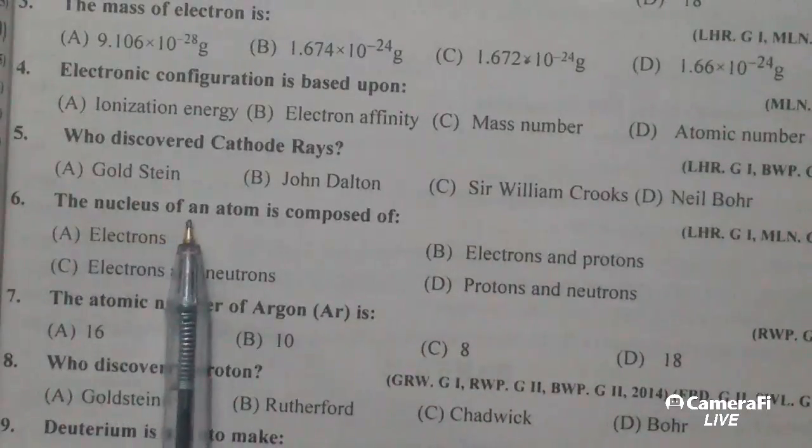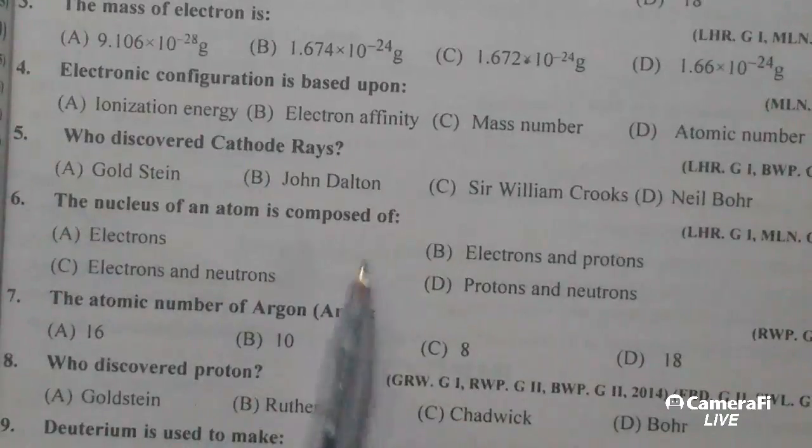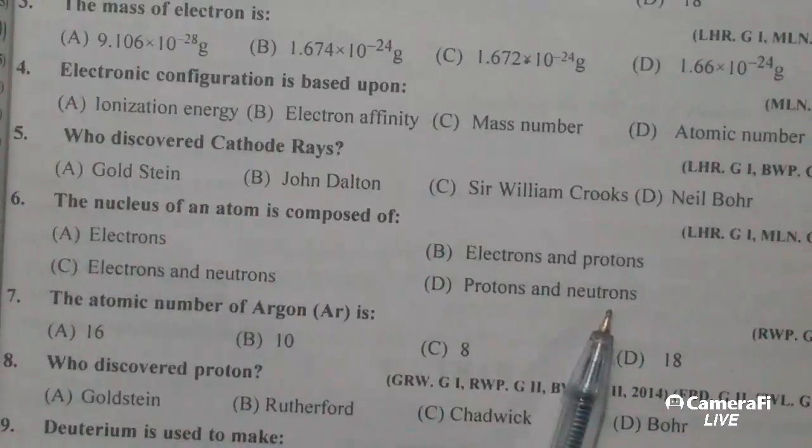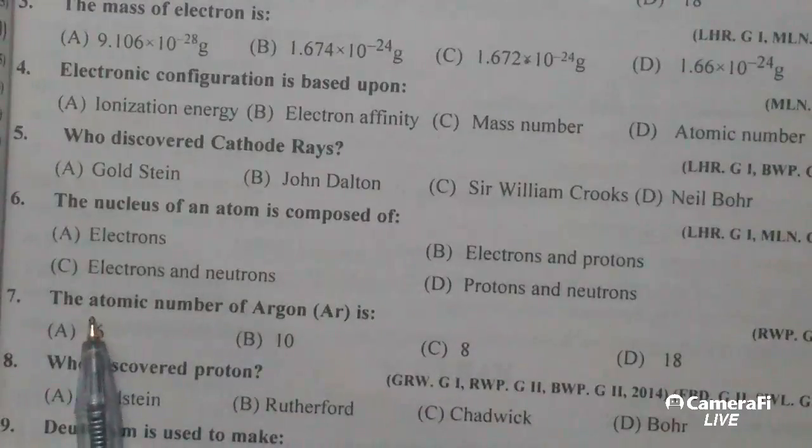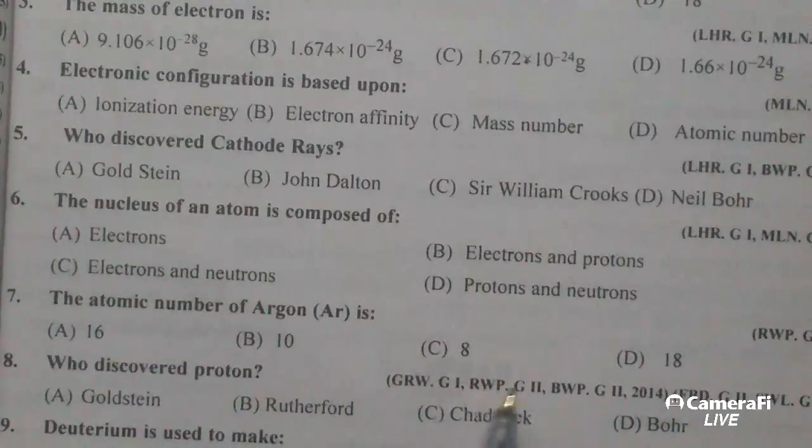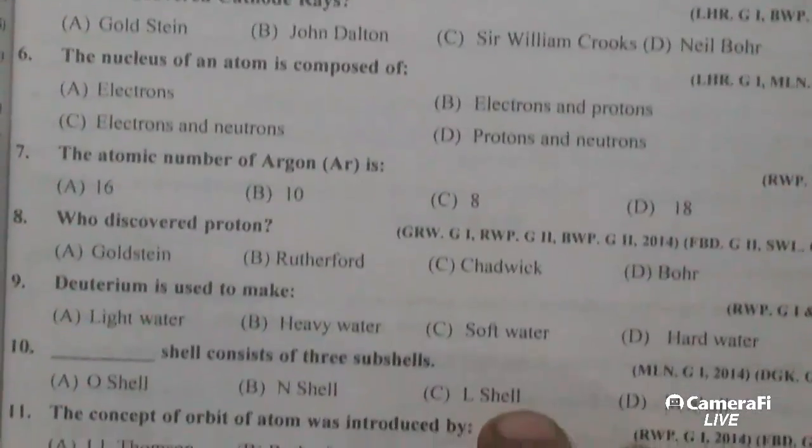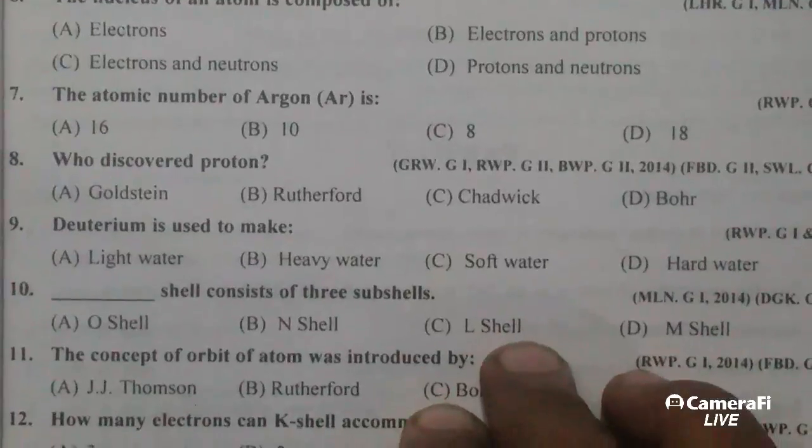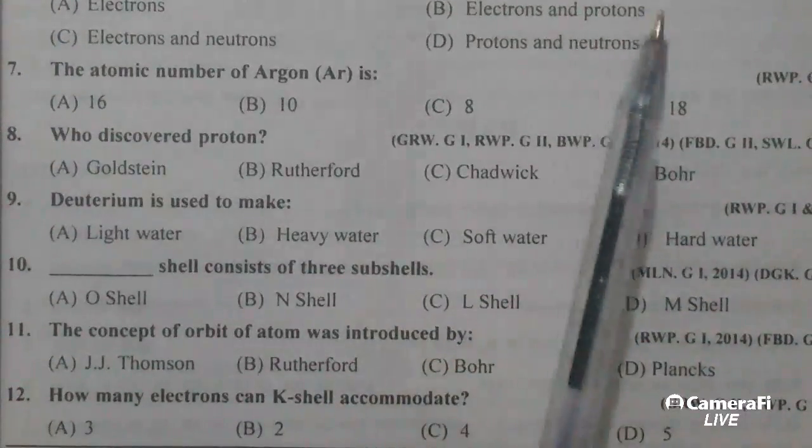The nucleus of an atom is composed of protons and neutrons. The atomic number of argon is 18.